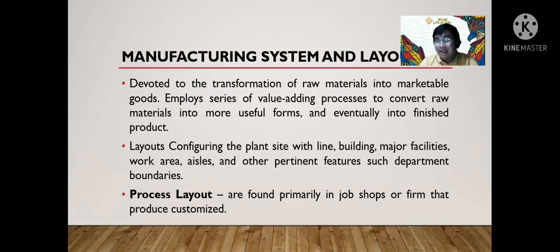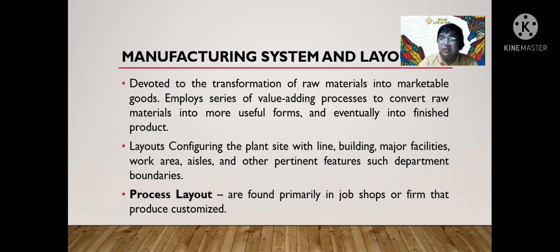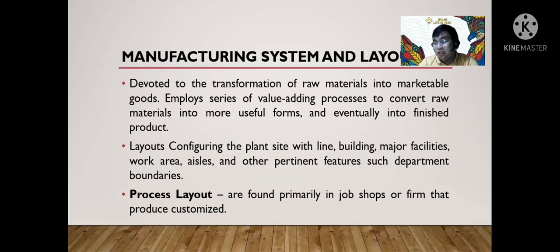The manufacturing system and layout is devoted to the transformation of raw materials into marketable goods, employing a series of value-adding processes to convert raw materials into more useful forms and eventually into finished products. Layout involves configuring the plant site with lines, buildings, major facilities, work areas, aisles, and other pertinent features such as department boundaries.